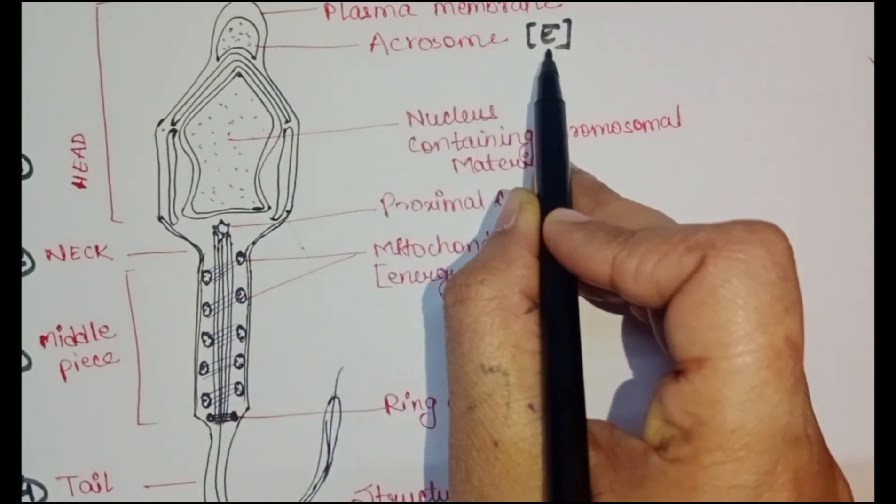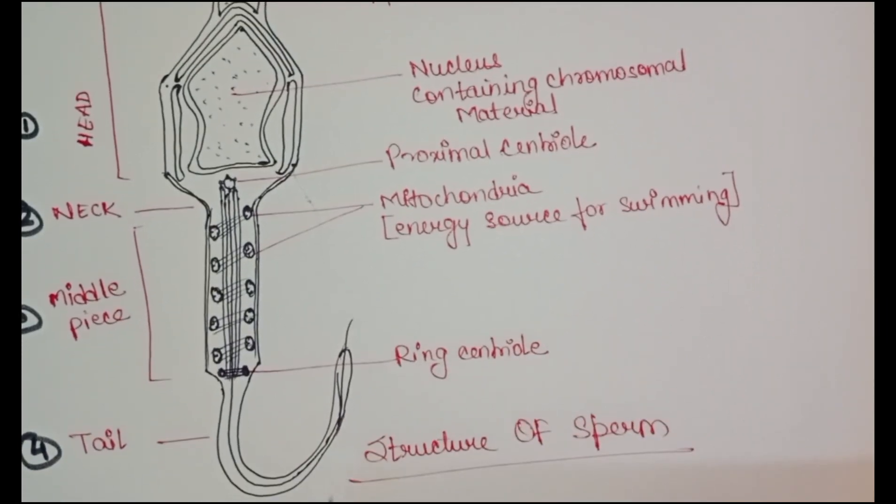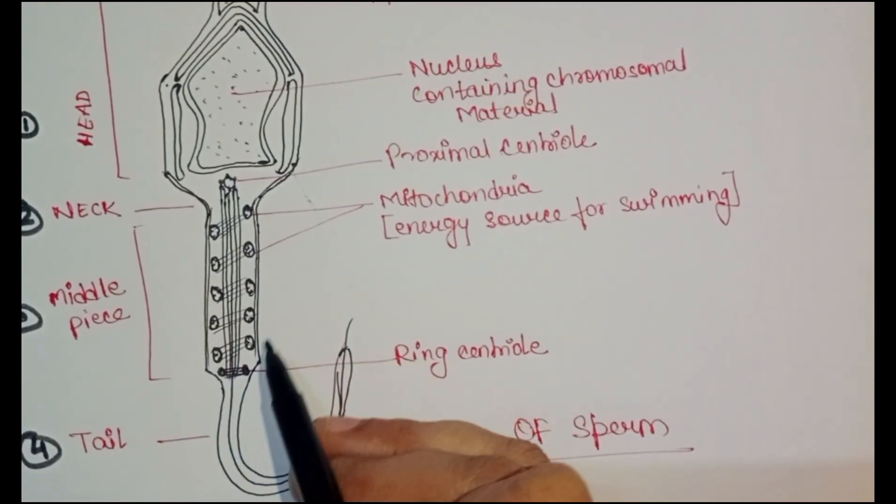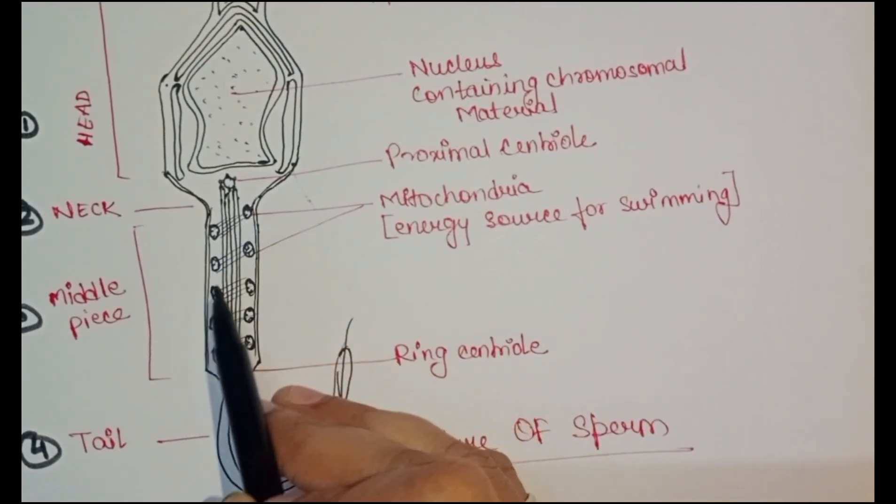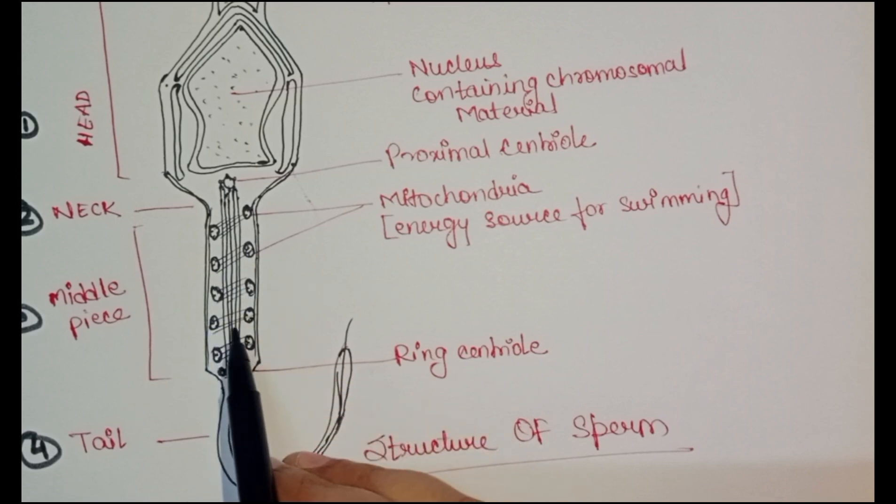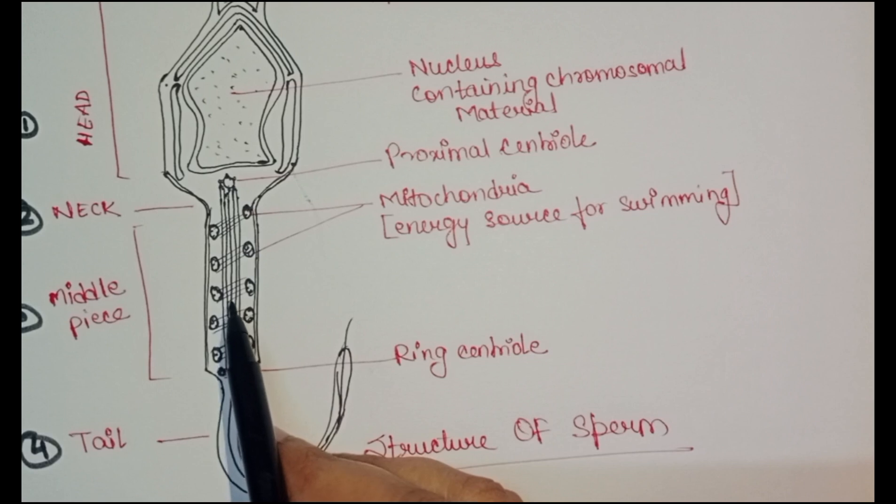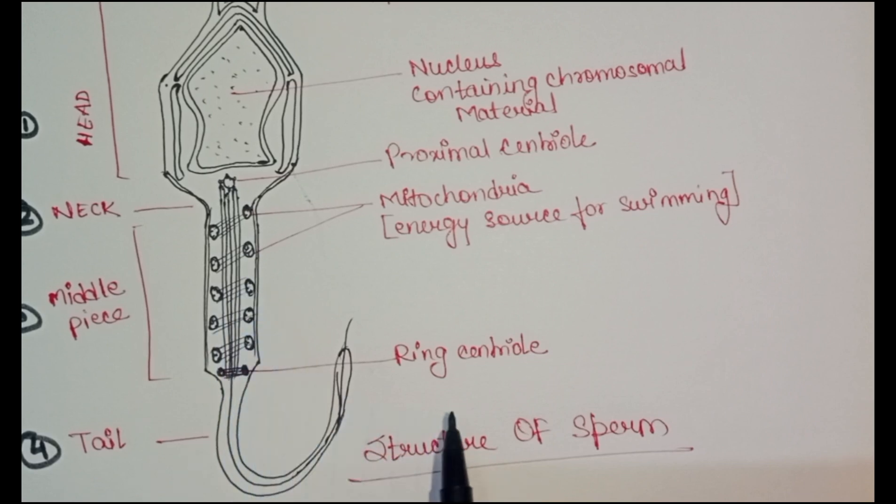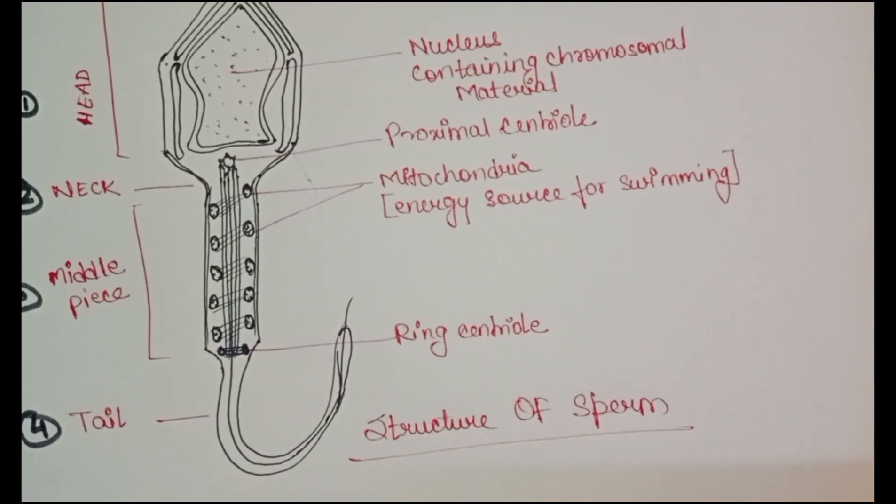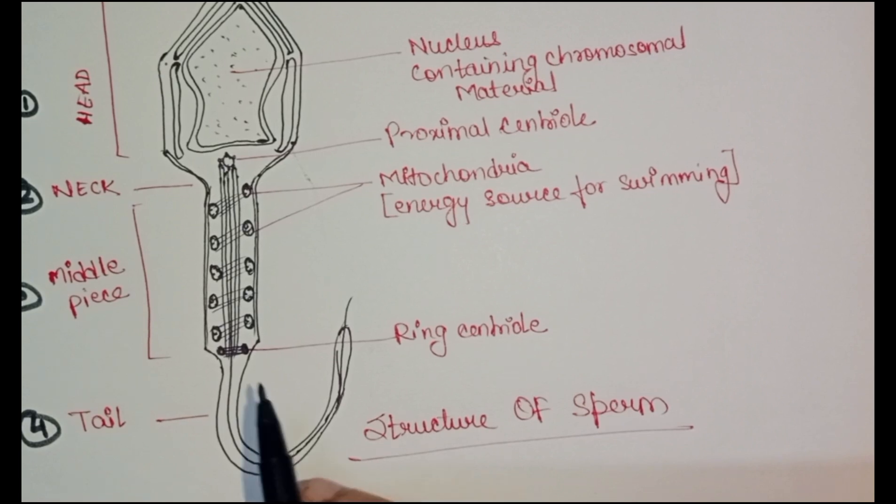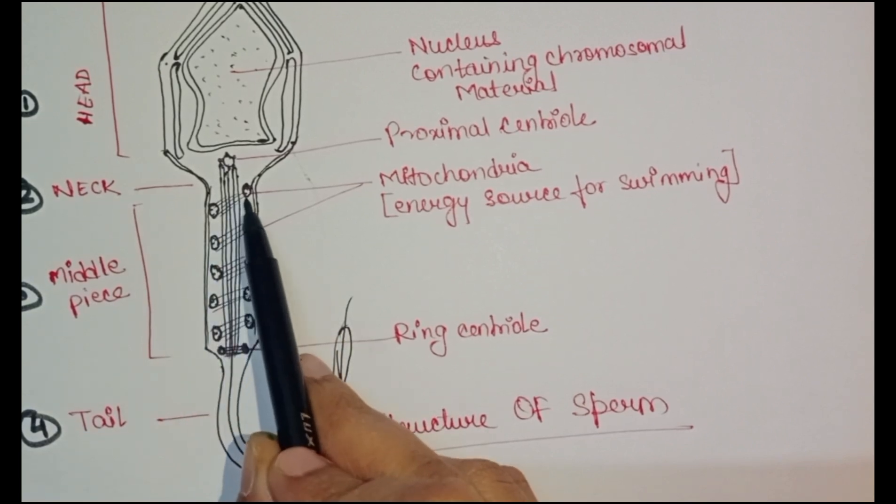The middle piece possesses numerous mitochondria which provide energy source for swimming, for the movement of the tail that facilitates sperm motility essential for fertilization.